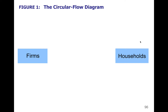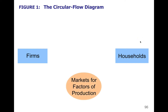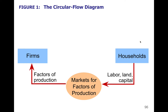In the circular flow diagram, we have households and firms in the market for factors of production. Households sell land, labor, capital, technology, and entrepreneurship — which is then purchased by firms to use as factors of production.